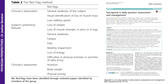From the clinician's observation point of view: general weakness of the subject, visual identification of loss of muscle mass, low walking speed. From the subject's presenting features: loss of weight, loss of muscle strength in arms or legs, fatigue, falls, mobility impairment, loss of energy, difficulty in activities of daily life — very important — as well as the clinician's assessment with nutrition, body weight, and physical activity.